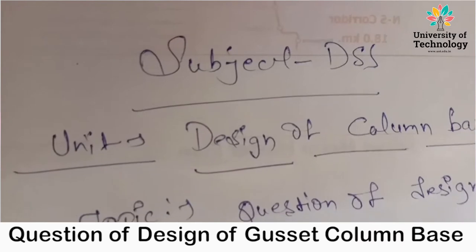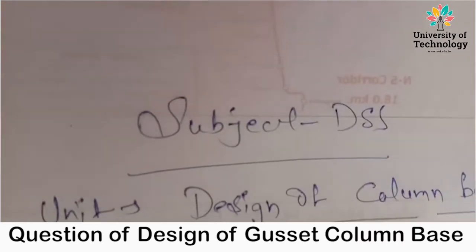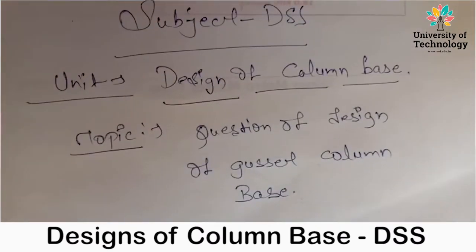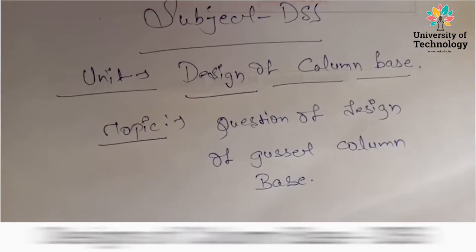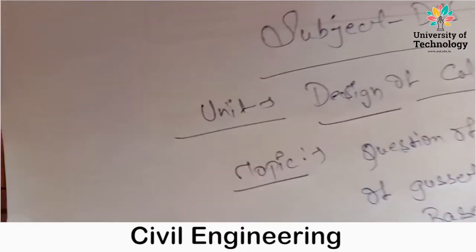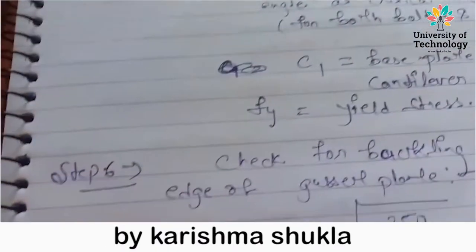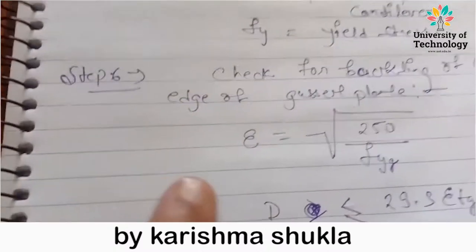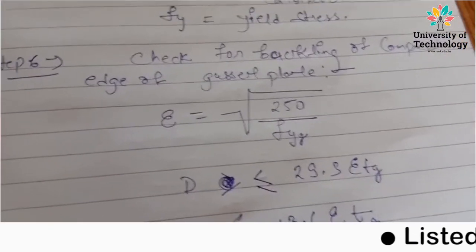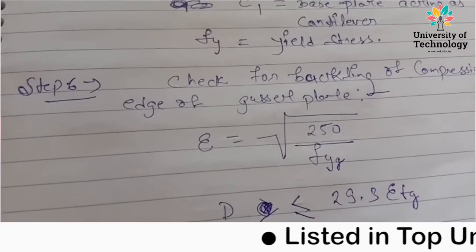This is Karishma Shukla and today we are going to learn about our subject DSS. Our unit is Design of Column Base and our topic is a question on Design of Gusset Column Base. Now we have left step number 6, so continuing with step number 6, we have to check for Buckling of Compression edge of Gusset Plate.